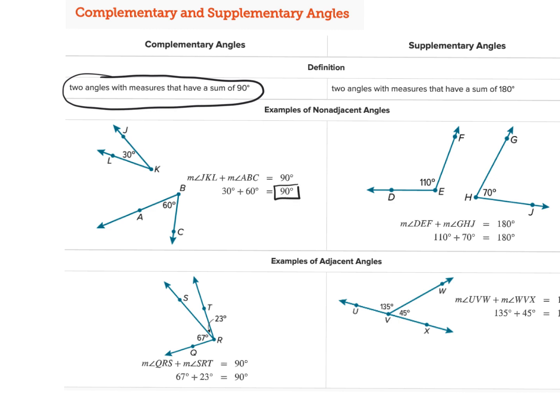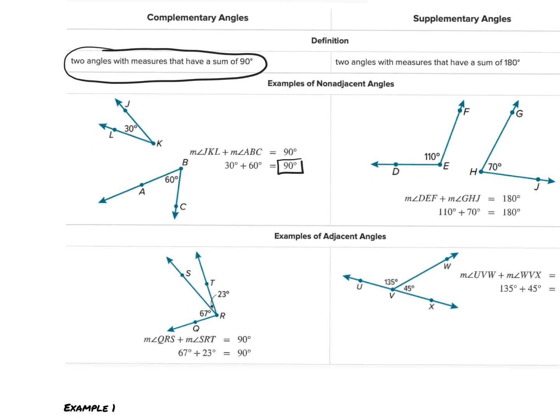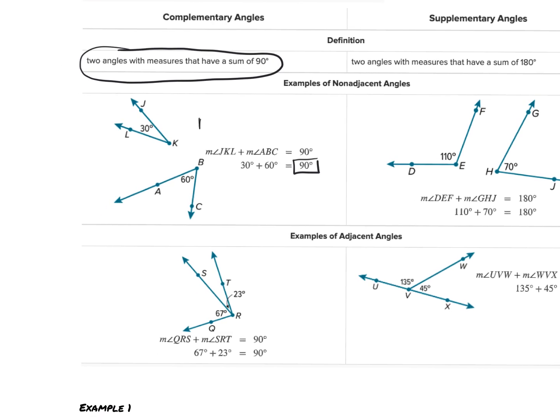Now you'll notice here we have both a non-adjacent example. So these are not adjacent. You notice these are angle ABC and JKL. They're not adjacent, they don't share a side or a vertex, whereas these two angles are adjacent.